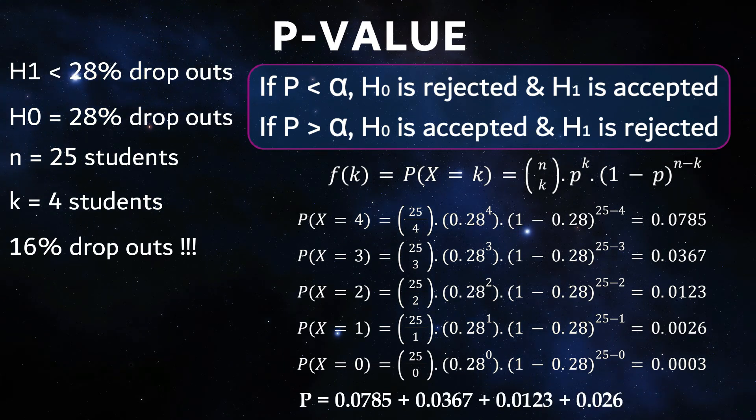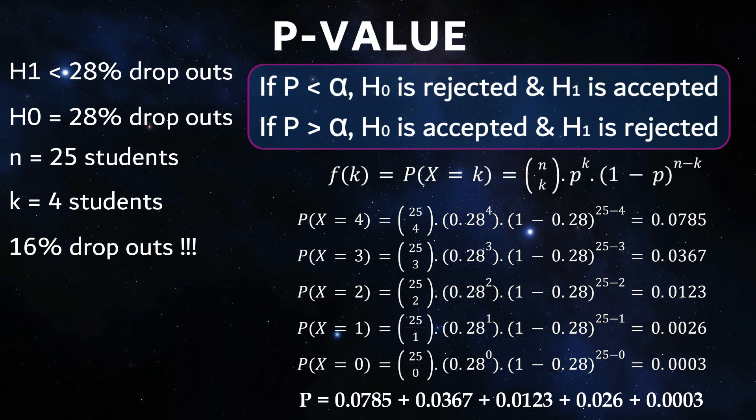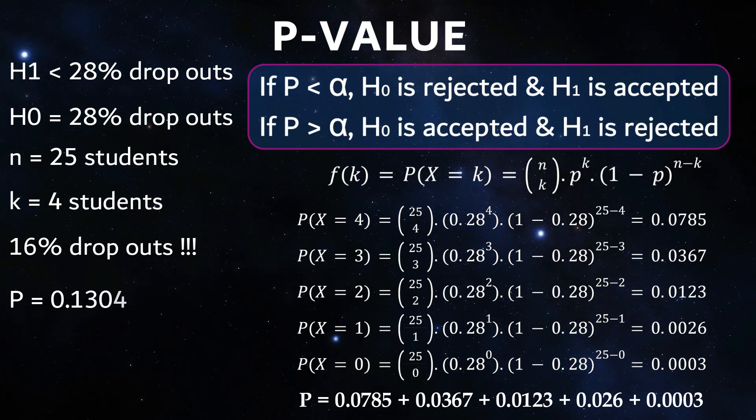When comparing it with the significance level, it becomes clear that the calculated p-value is 0.1304 and thus significantly above the estimated significance level alpha, which here is 0.05.